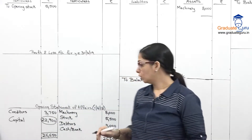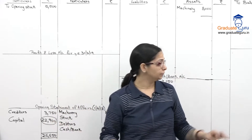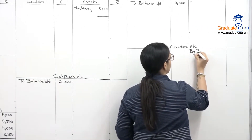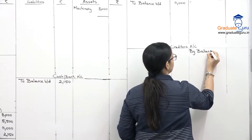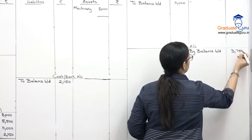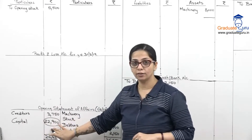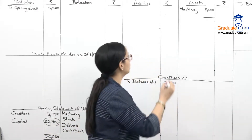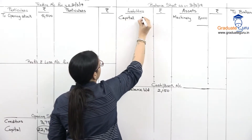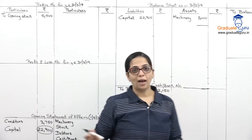Creditors 3,750 go to the creditors account credit side as balance brought down. Capital 22,900 goes to the balance sheet inner column. Opening statement of affairs is now empty.